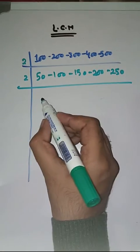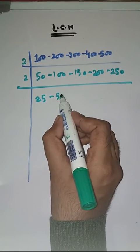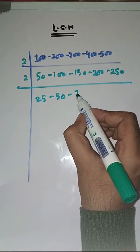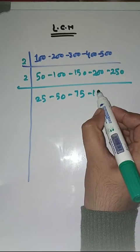2 times 25s are 50, 2 times 50s are 100, 2 times 75s are 150, 2 times 100s are 200, 2 times 1s are 2, 2 times 2s are 4, 2 times 5s are 10.